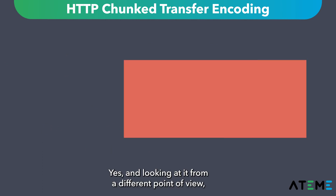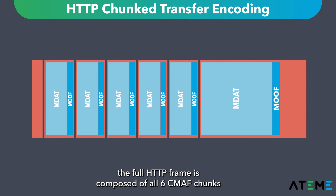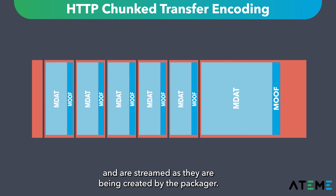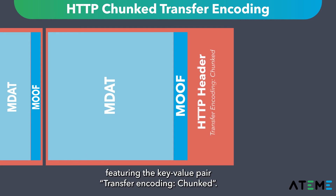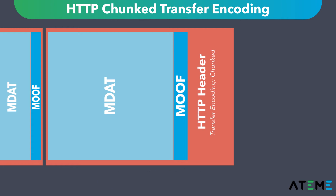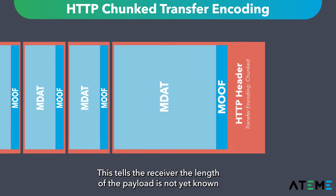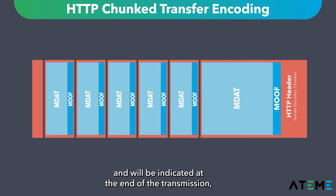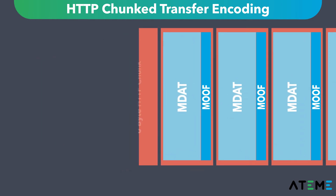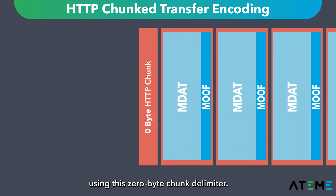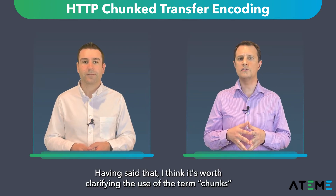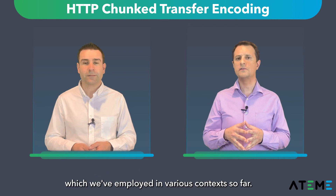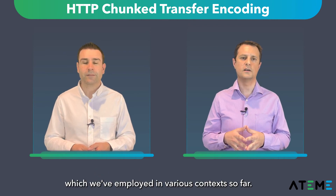Looking at it from a different point of view, the full HTTP frame is composed of all six CMAF chunks and are streamed as they are being created by the packager. This frame starts with an HTTP header featuring the key-value pair transfer-encoding: chunked. This tells the receiver the length of the payload is not yet known and will be indicated at the end of the transmission, using this zero-byte chunk delimiter. Having said that, I think it's worth clarifying the use of the term chunks, which we've employed in various contexts so far.